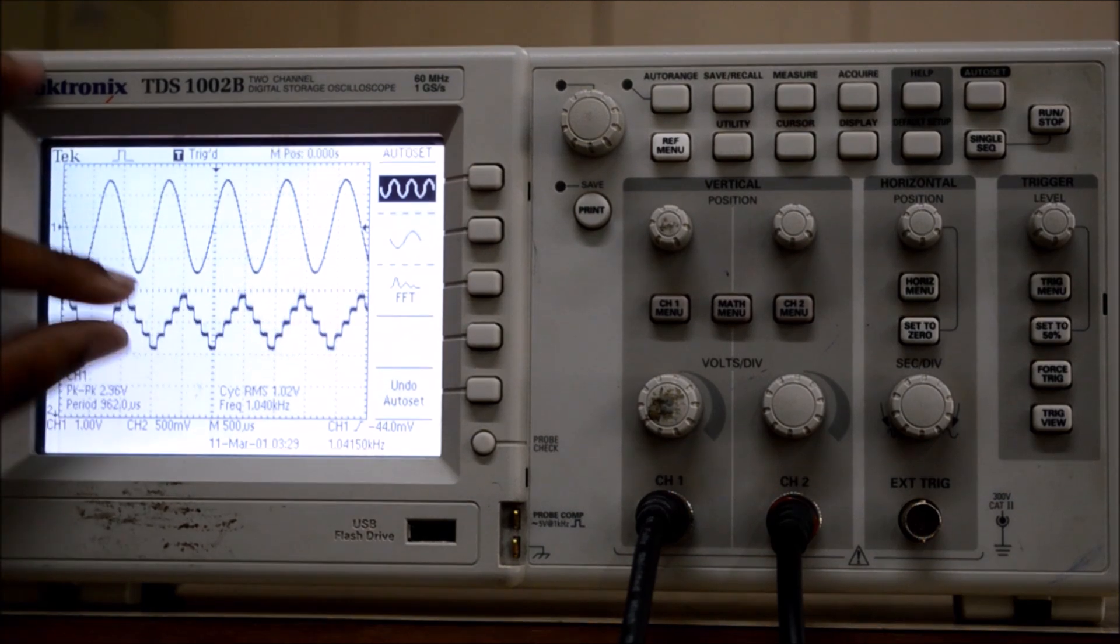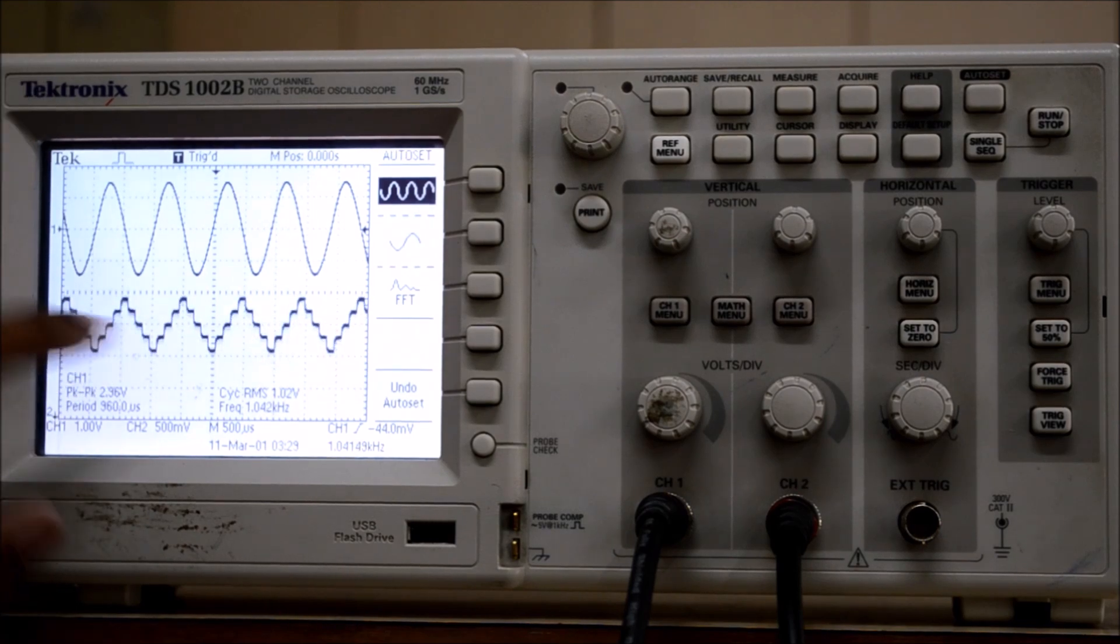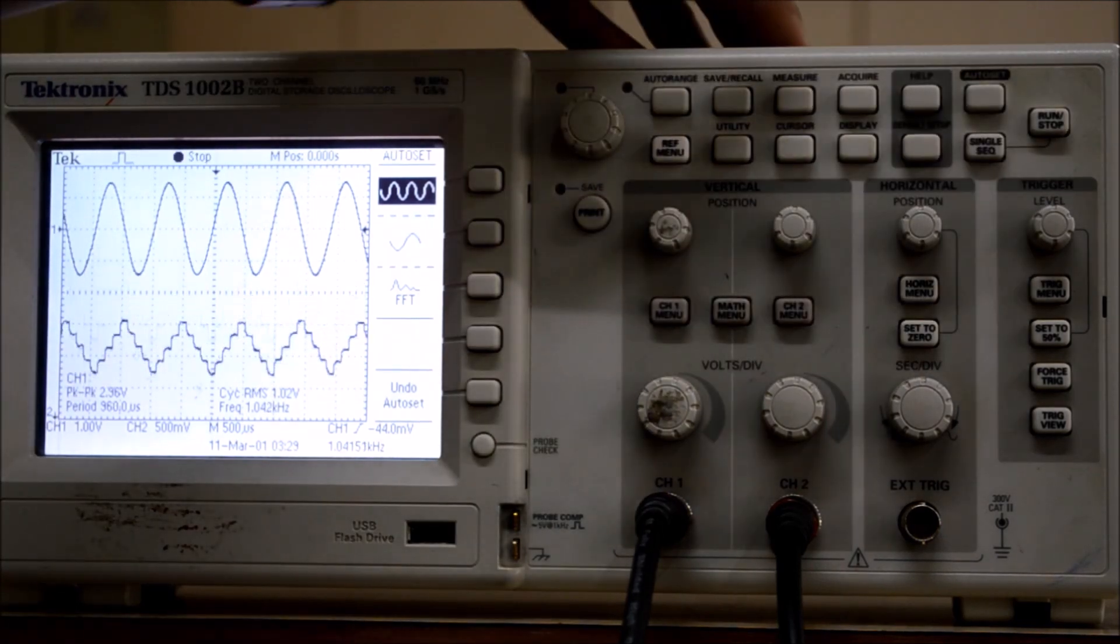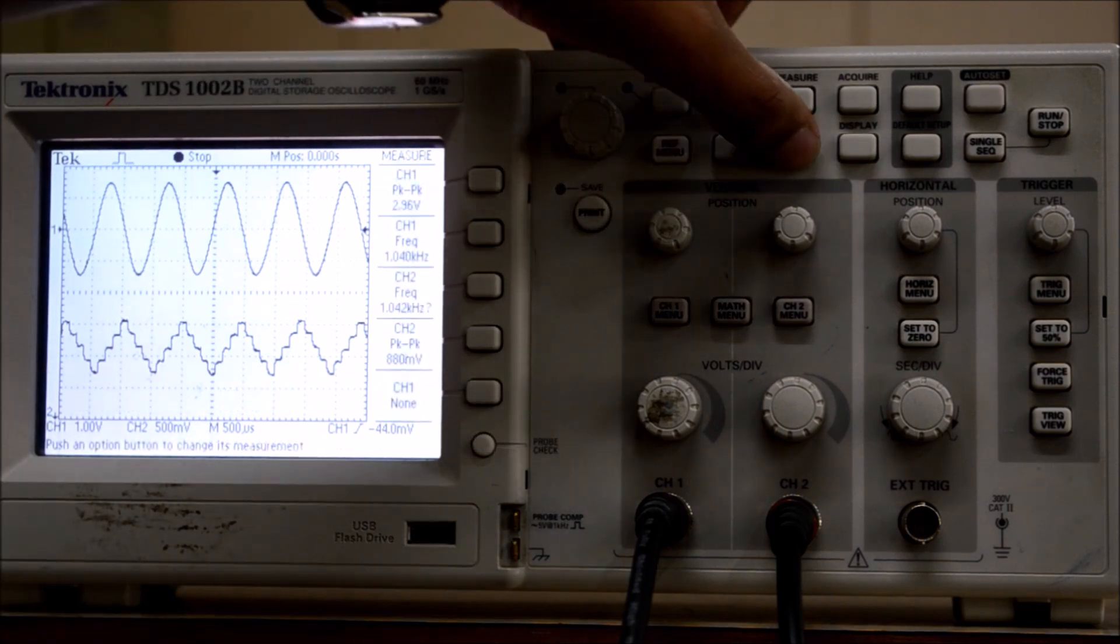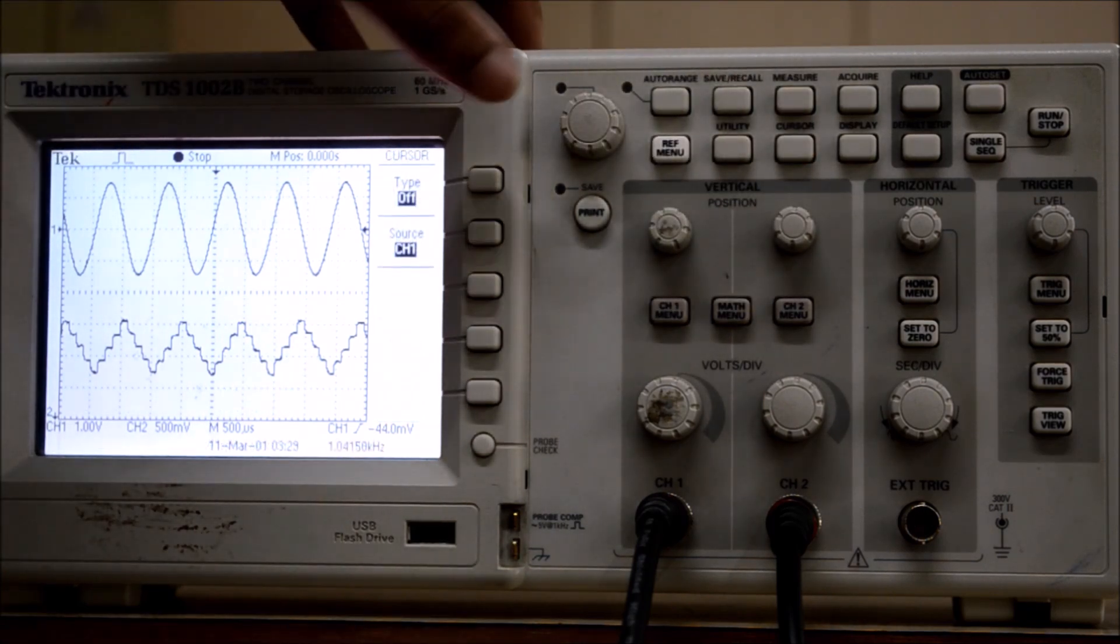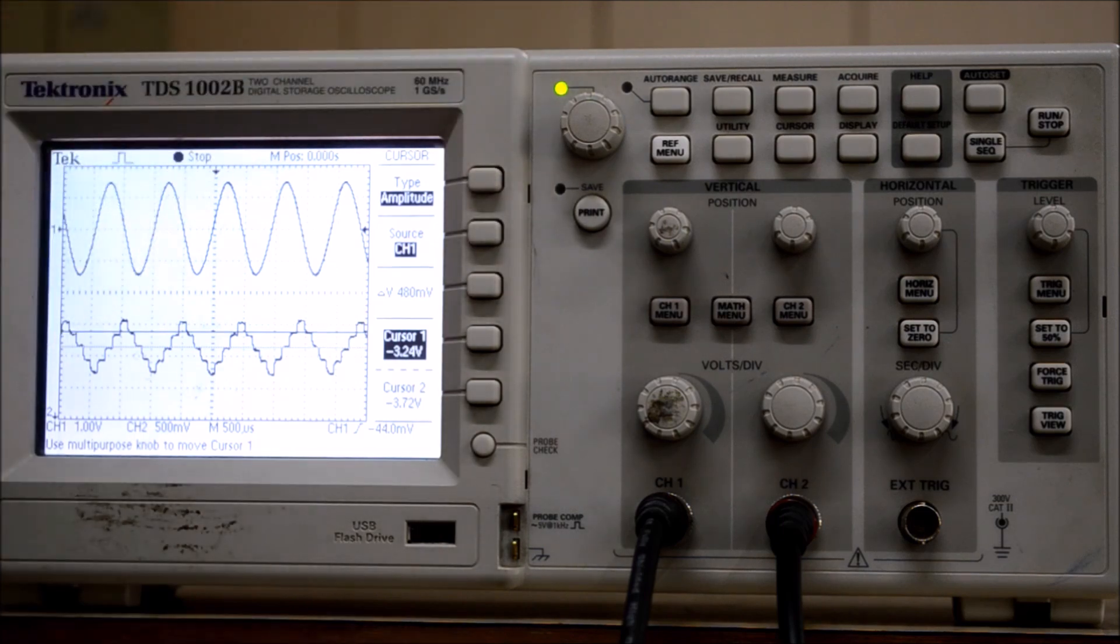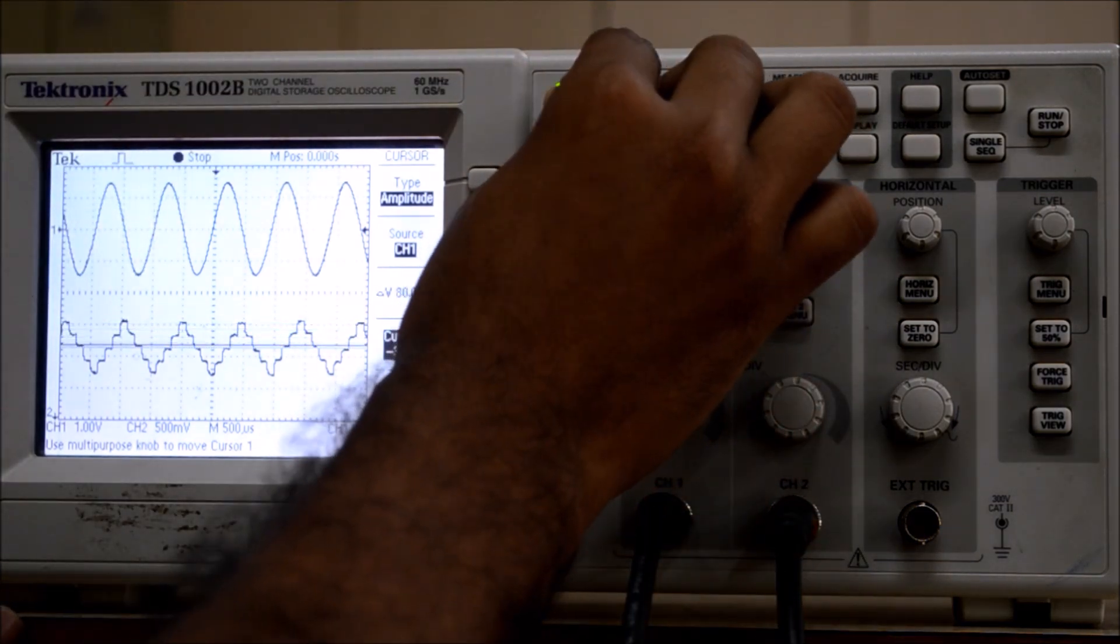We need to measure the minimum step size of this DAC output. Go to measure, cursor, type amplitude and move this cursor.